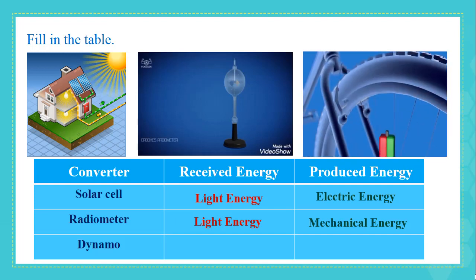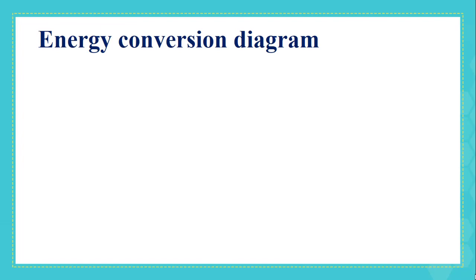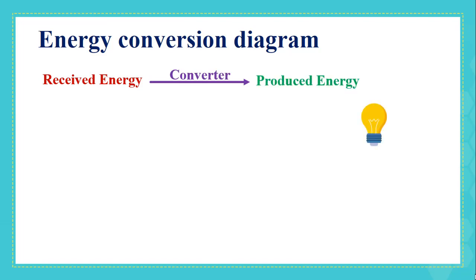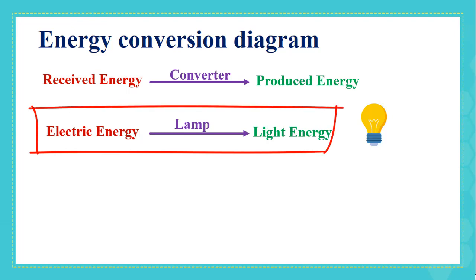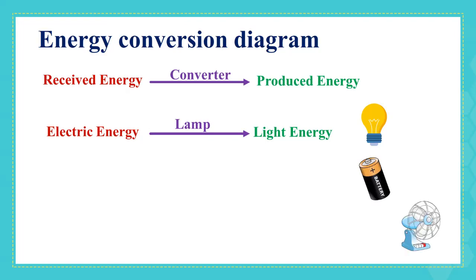The dynamo of a bicycle converts the mechanical energy it receives to electric energy, which you use to light the lamp of the bicycle. We can use a diagram to show the energy transformation taking place in a certain converter. For the lamp, the received energy is electric energy, which is converted to light energy with the aid of the lamp. Don't forget to write the name of the converter above the arrow. Now write in the form of a diagram the energy transformation taking place in a dry cell and fan.